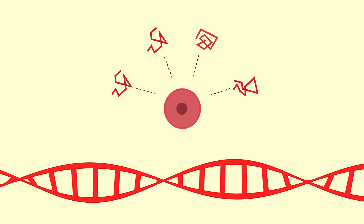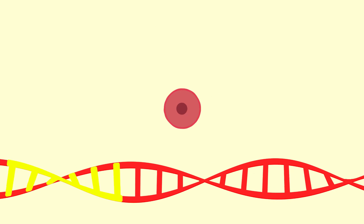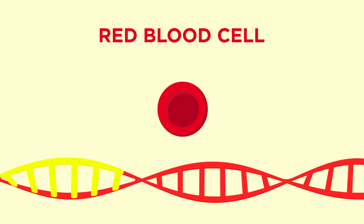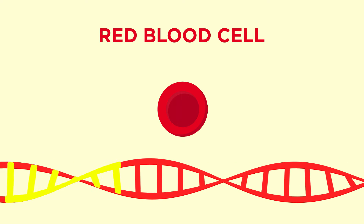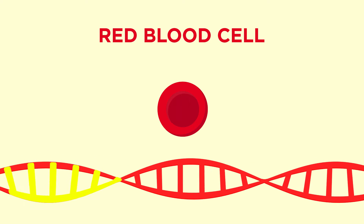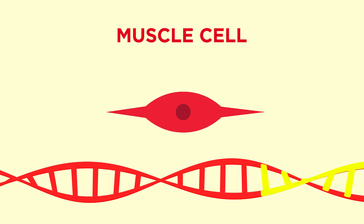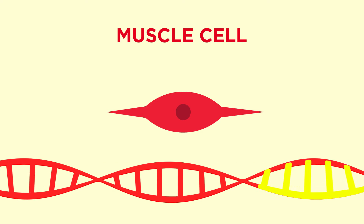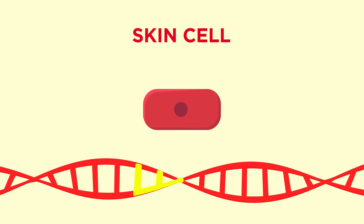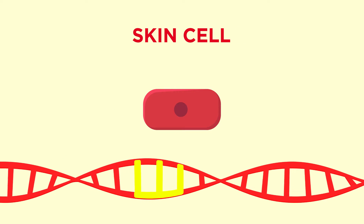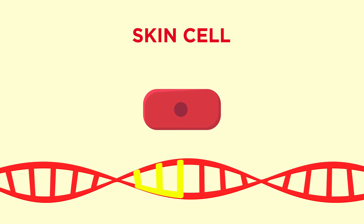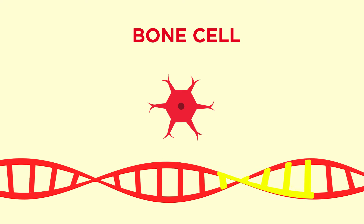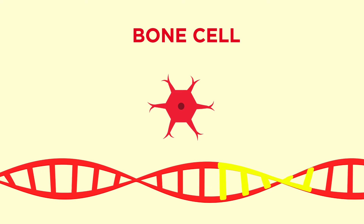The set of genes switched on in one type of cell, say a red blood cell, is different to the set of genes that are switched on in another type of cell, like a muscle cell. This combination of genes allows the cell to make different structures, which results in the cells looking and functioning differently.